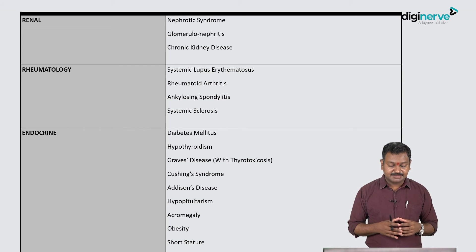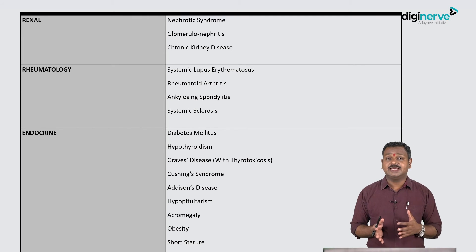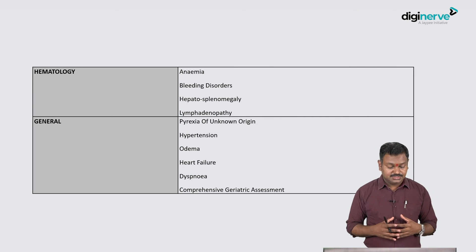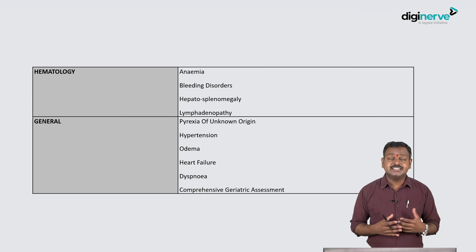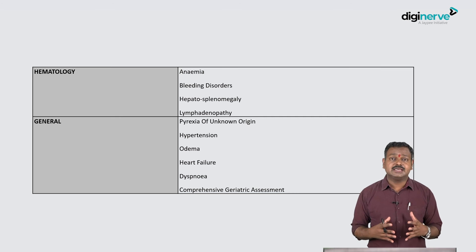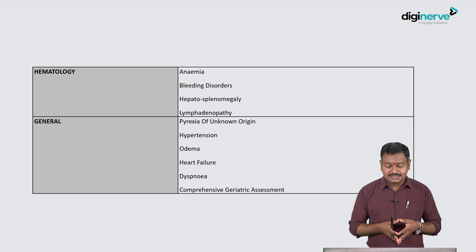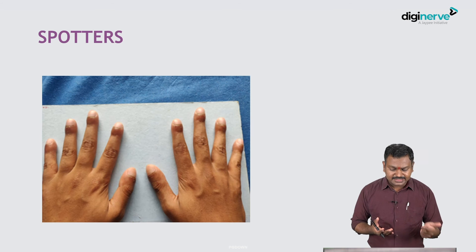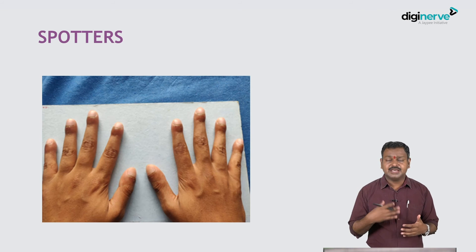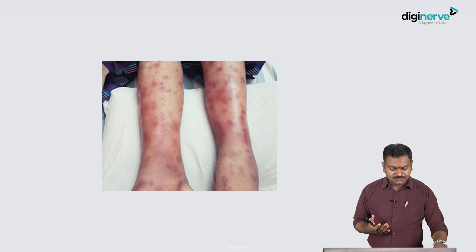Common semi-long cases include renal cases like nephrotic syndrome or CKD, rheumatological cases, endocrine cases like diabetes or thyroid, hematological cases like anemia or lymph nodes, general cases like fever, edema, or heart failure, and geriatric assessment as per the CBME curriculum. Spotters require you to identify a finding and discuss it. Examples include pan-digital clubbing - where they ask about causes, etiologies, and grades - and erythematous lesions on the shin suggesting erythema nodosum, with questions about causes and approach.